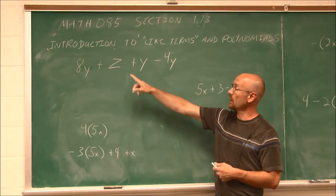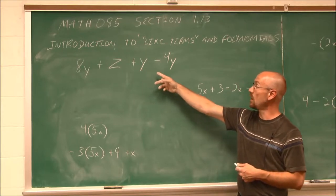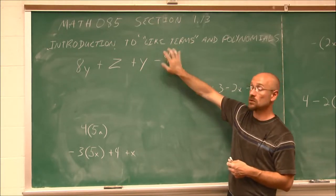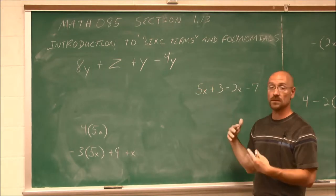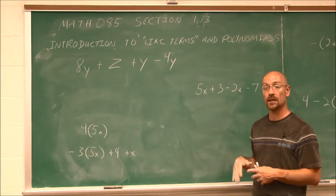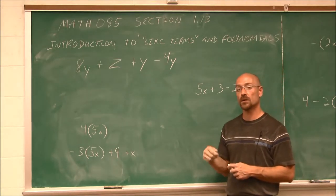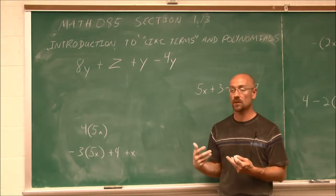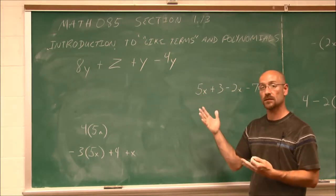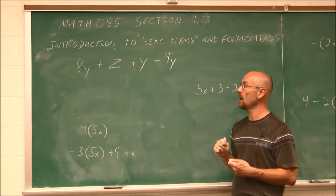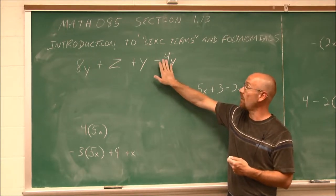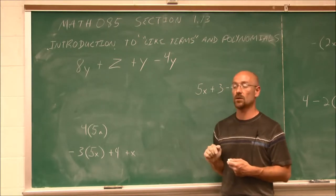Let's say we have this example: 8y plus z plus y minus 4y. What I want to do is combine like terms. But if we look at this, we see it's not in any particular order — our variables are kind of jumbled around. We have to realize that all the signs in front belong to that term.